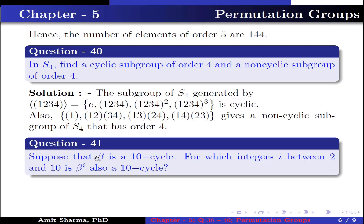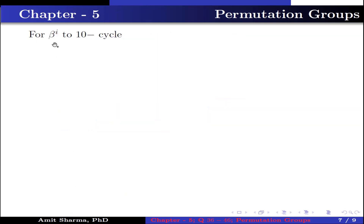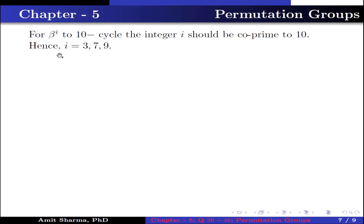Question number 41. Suppose that beta is a 10-cycle. For which integers i between 2 and 10 is beta^i also a 10-cycle? Given beta is a 10-cycle, we have to find integers i between 2 and 10 such that beta to the power i is also a 10-cycle. For beta^i to be a 10-cycle, the integer i must be coprime to 10. Hence the values of i are 3, 7, and 9.